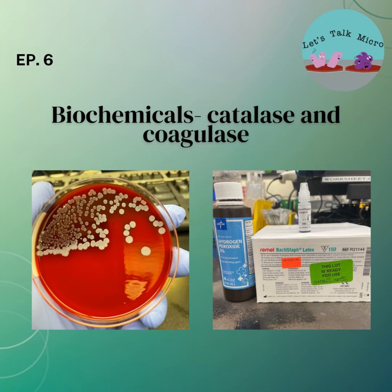Aerococcus urinae is a gram-positive cocci in clusters, alpha-hemolytic, and PYR-negative. If you have gram-positive cocci in clusters, alpha-hemolytic, and PYR-positive, it is more likely Aerococcus viridans, which is flora. So the 40x is a very helpful tool — it points you in the right direction. Remember: with 40x, your condenser and light need to be down, as opposed to 100x where the condenser and light need to be up.